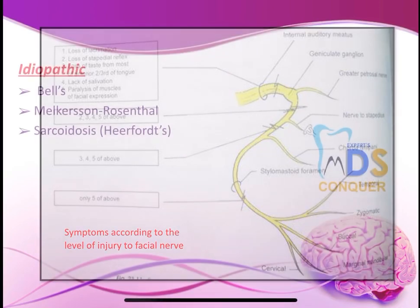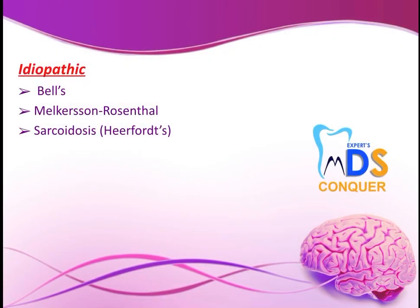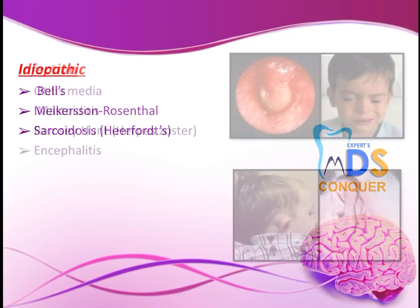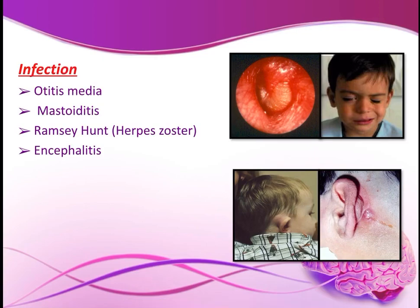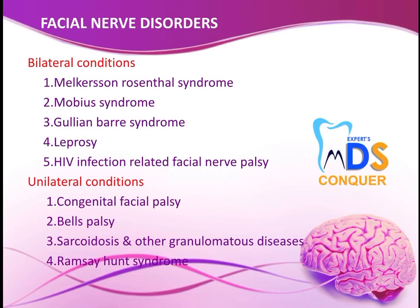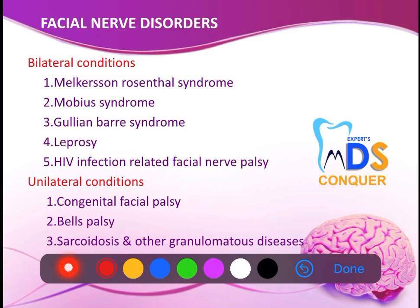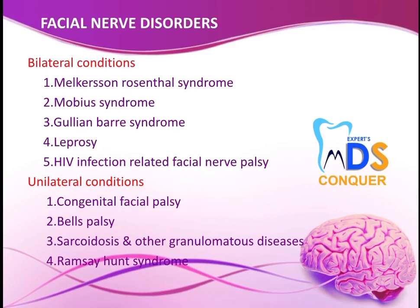Draw the diagram showing the level of injury and corresponding symptoms — this is again from Chaurasia. Idiopathic reasons include Bell's palsy, Melkersson-Rosenthal syndrome, and Heerfordt syndrome. Infections include otitis media, mastoiditis, Ramsay Hunt syndrome, and encephalitis. Note both unilateral and bilateral conditions. For oral medicine or oral pathology students, give descriptions of these syndromes — for example, Melkersson-Rosenthal syndrome is a triad of orofacial edema (granulomatosa), scrotal tongue, and facial palsy.